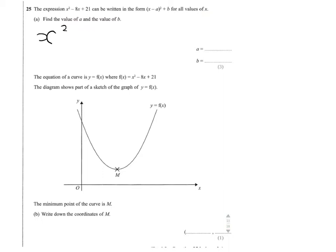So we're going to have x squared minus 8x plus 21 equal x minus, now the a is fairly easy, we can find the a by simply halving the number before the x, which gives us 4. So we'll write that,